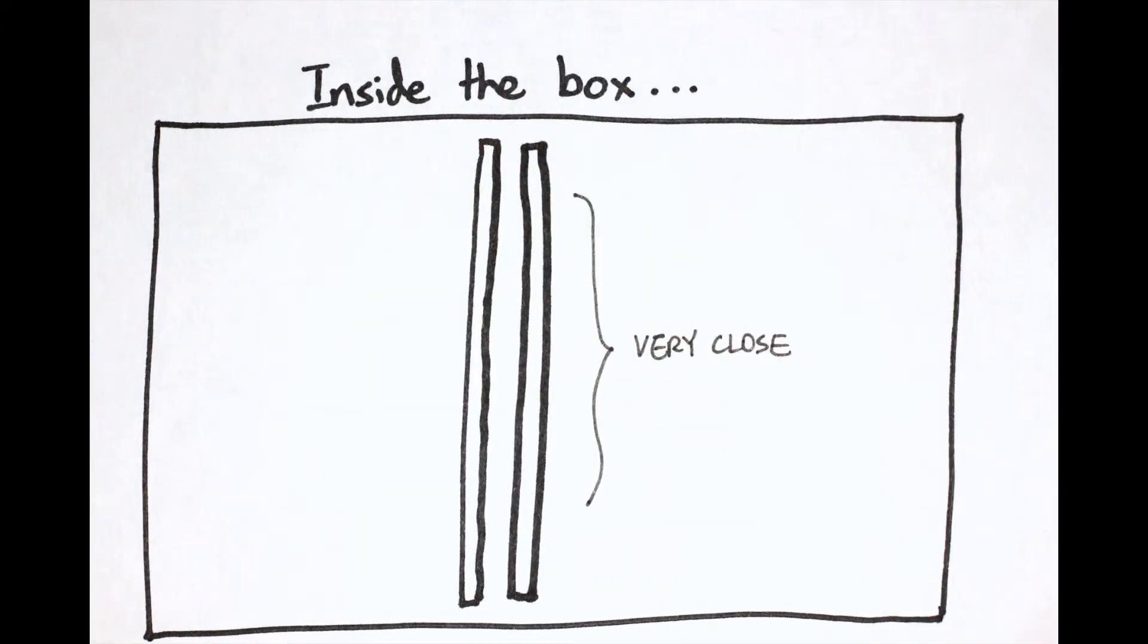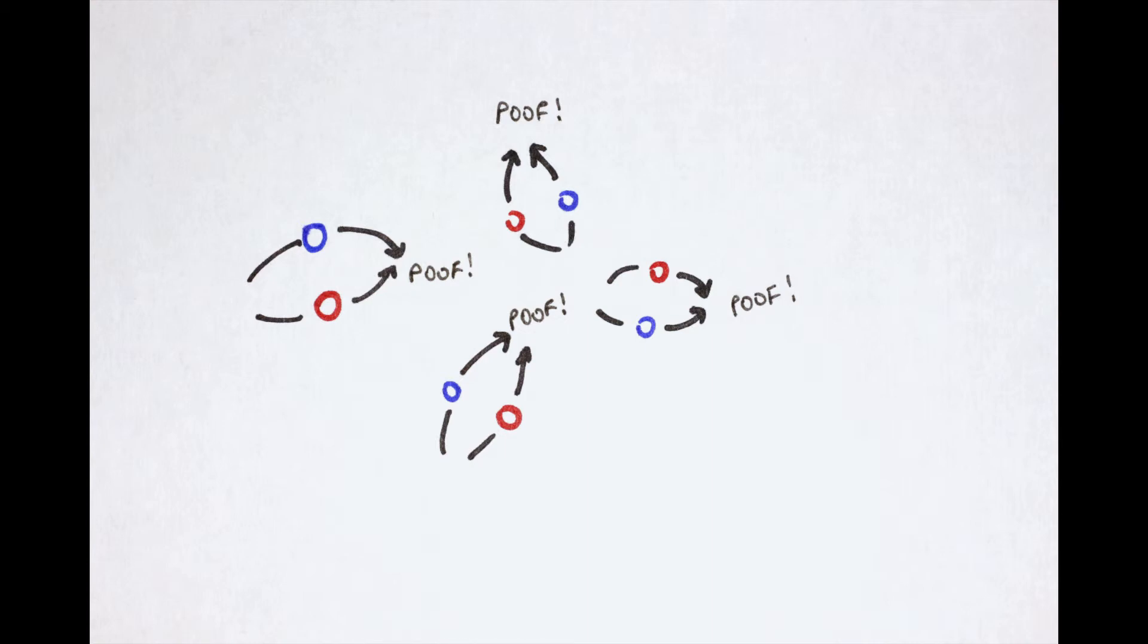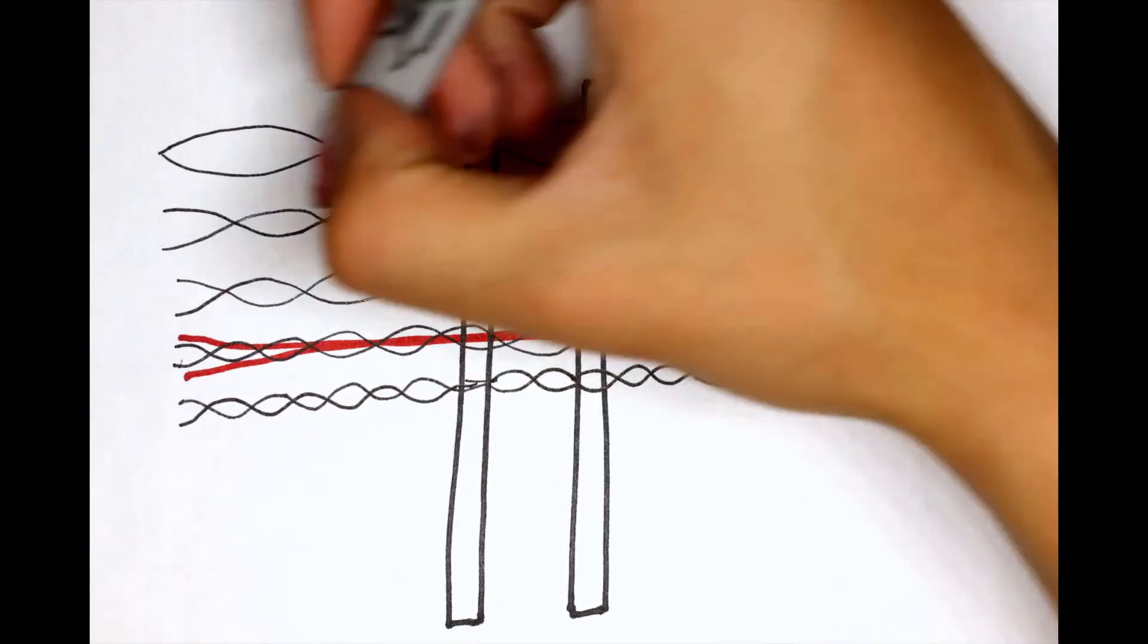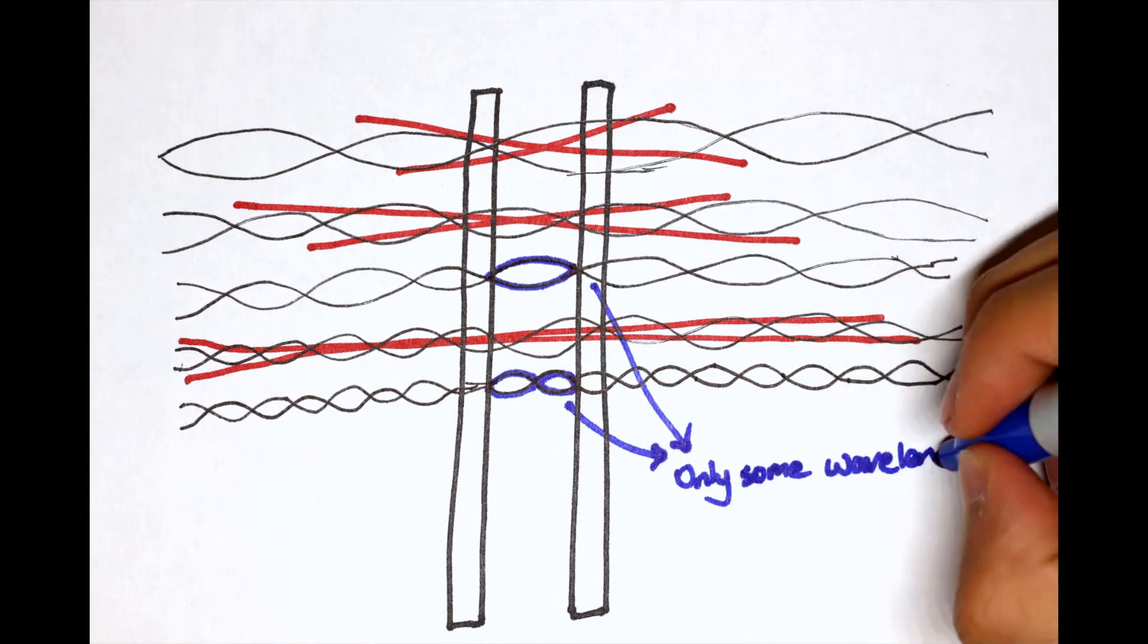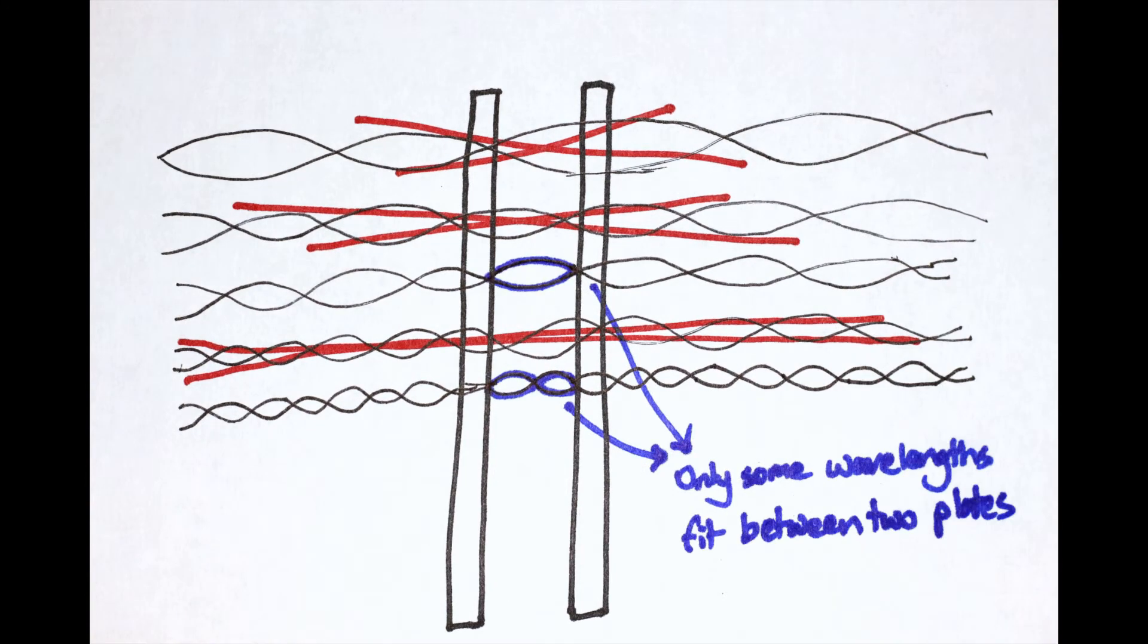Imagine putting two uncharged conducting plates in our box of nothingness. Normally the empty box would be teeming with virtual particles that pop in and out of existence. But once we add these two plates, we eliminate some of the virtual particles with wavelengths that cannot exist within the space between the two plates.